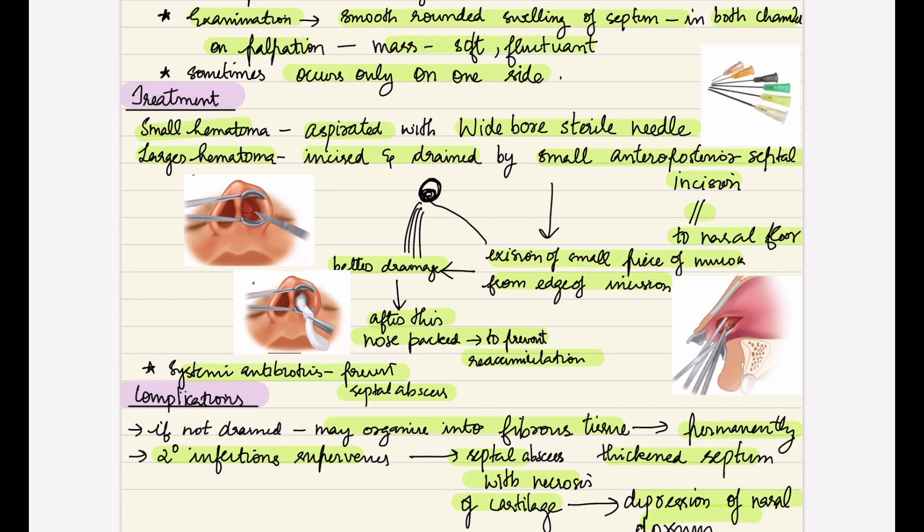Complications include: if the hematoma is not drained, it may organize into fibrous tissue causing a permanently deviated septum. Secondary infections include septal abscess with necrosis of the cartilage, which causes depression of the nasal dorsum.